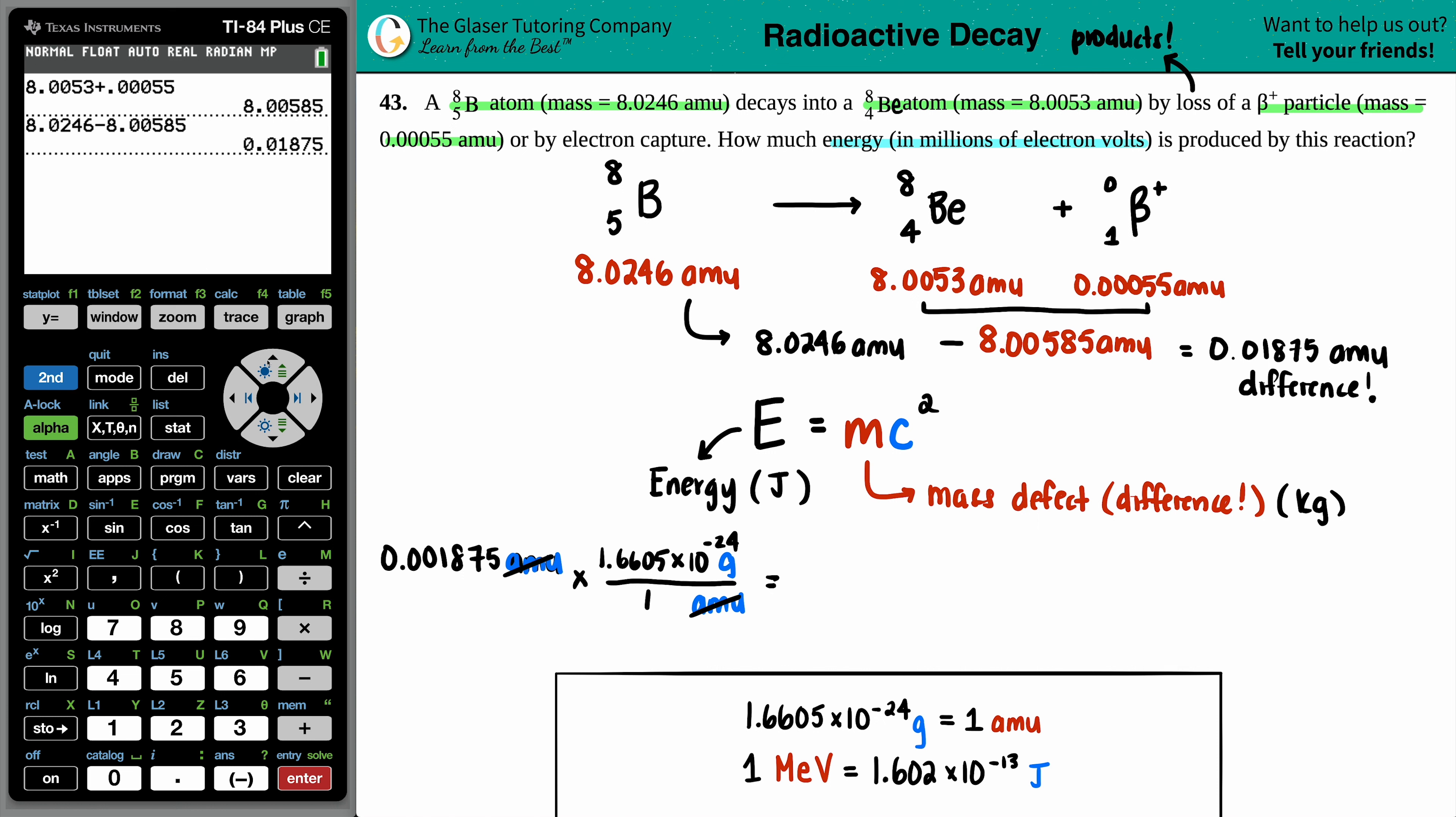The AMU cancels out, and now we have grams. I'm going to take this value and times it by 1.6605 times 10 to the negative 24th. We got 3.11 times 10 to the negative 26, and that's grams.